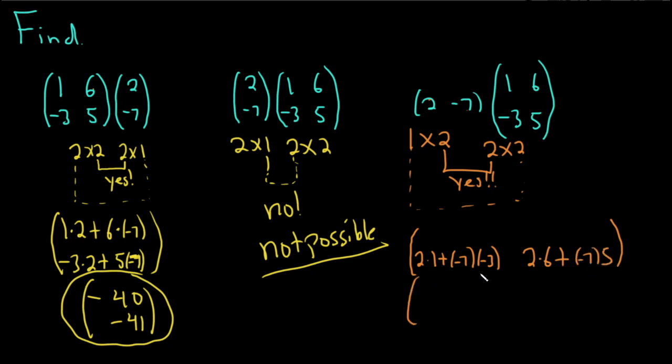So, this will be 2 minus 21. So, yeah, 2, I think I did that right. Let's see, 2 times 1 is 2. Oh, this is, yeah, it's a plus. It's 2 plus 21, so it's 23. So, it's not minus, right? And then, this one here would be 12 minus 35, which should be negative 23.